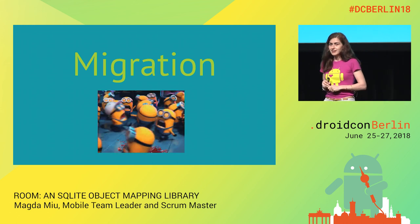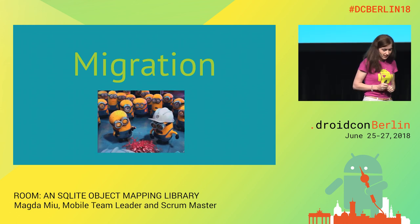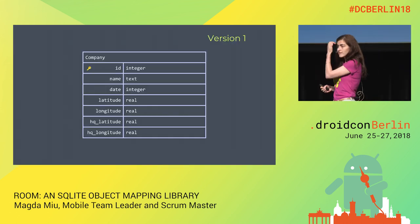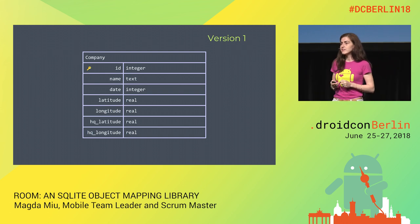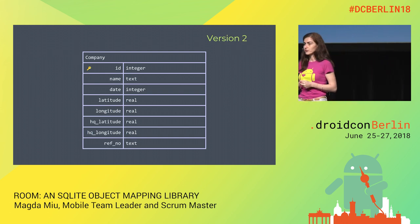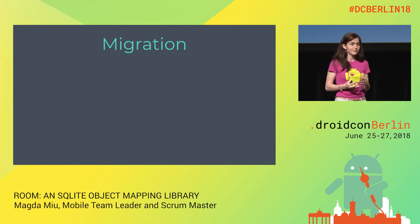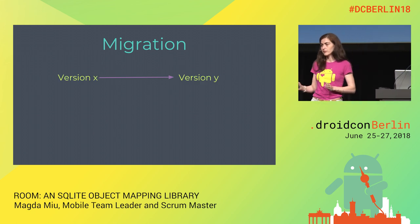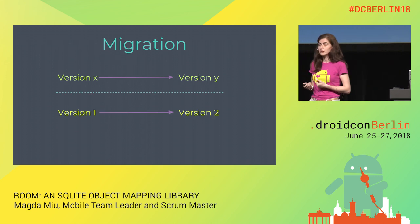Migration is a painful topic sometimes. Room offers migration support. Let's say our company table has a current structure in version 1, and for the next release we need to add a 'ref_number' column. This means changing the database schema. Migration means keeping the user's data from one version to another — in our case, migrating from version 1 to version 2.